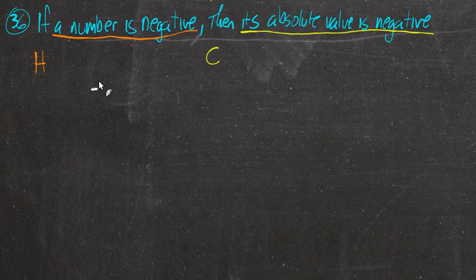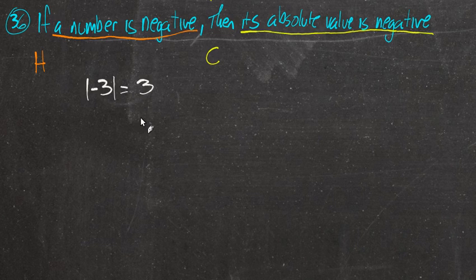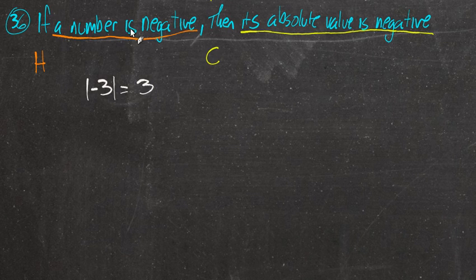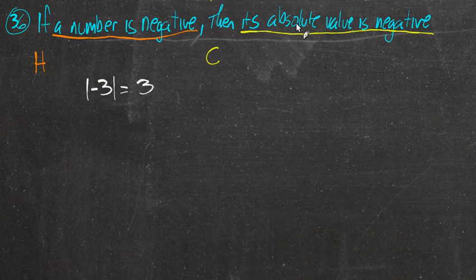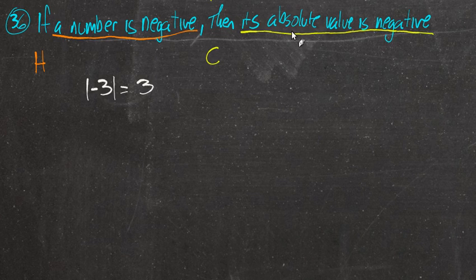It's definitely false because we can give a counterexample. Take negative 3: a number is negative — is the absolute value of negative 3 also negative? No, the absolute value is 3. We just talked about absolute values — they're always positive. Here's the counterexample: a specific instance where the statement is not true. In fact, an absolute value will never be negative; it's always positive. So this is always a false statement.